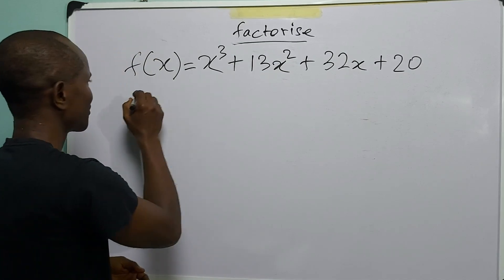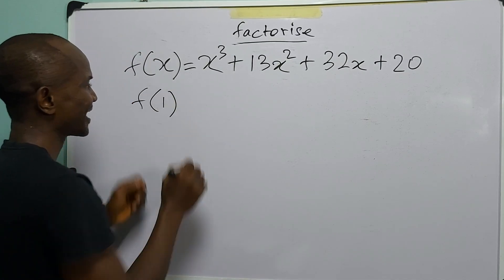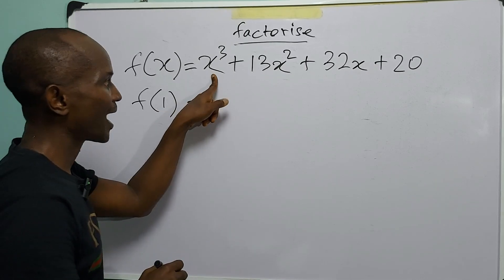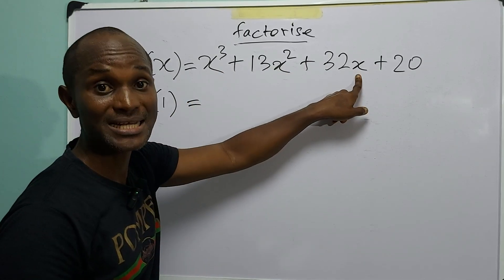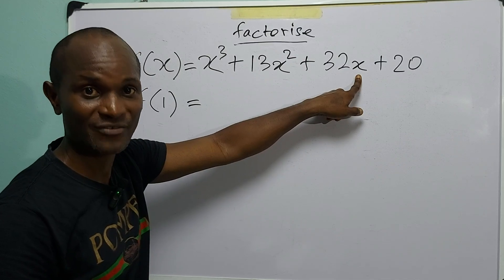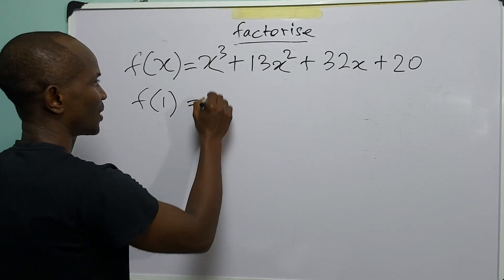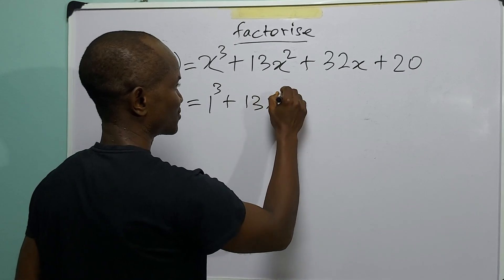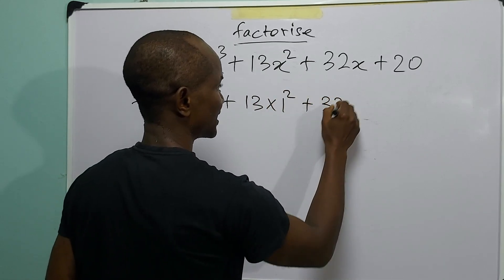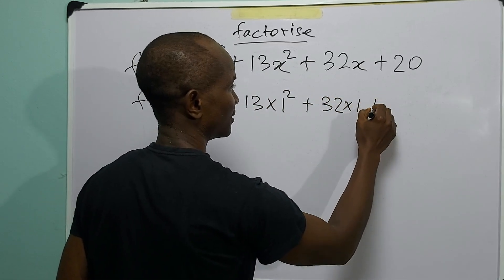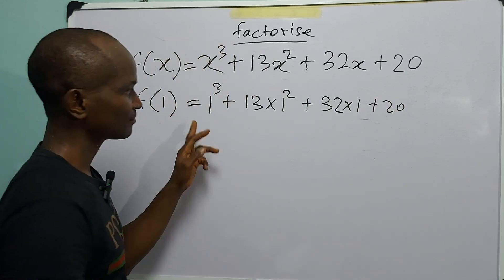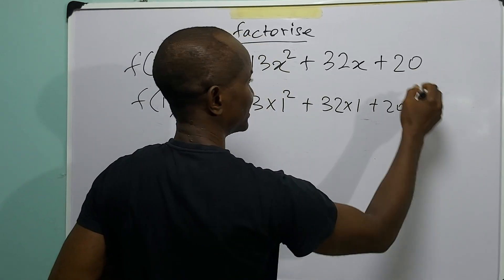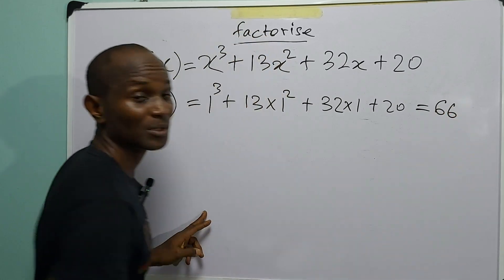For instance, if we choose x to be equal to 1, then what we do is plug 1 into any place in the expression where we have x. So that is 1 cubed plus 13 times 1 squared plus 32 times 1 plus 20.